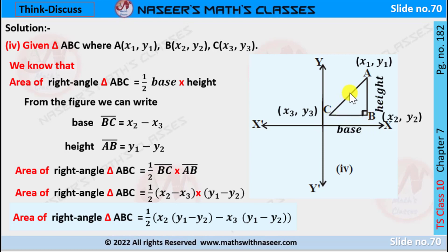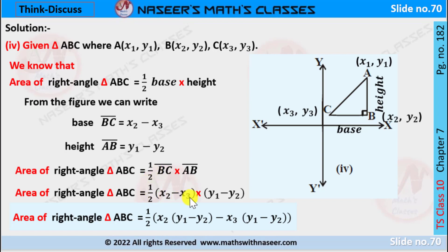Think and Discuss, fourth problem. From the figure, the right angle triangle is in the first quadrant, so all coordinates of A, B, C are positive: A(x1, y1), B(x2, y2), C(x3, y3). The area equals half times base times height. Base BC equals the difference between x2 and x3; height AB equals the difference between y1 and y2. Substituting into the formula gives half times (x2 − x3) times (y1 − y2). By the distributive law, this expands to x2(y1 − y2) minus x3(y1 − y2), which is the area of triangle ABC in the first quadrant.